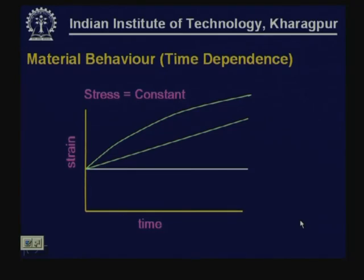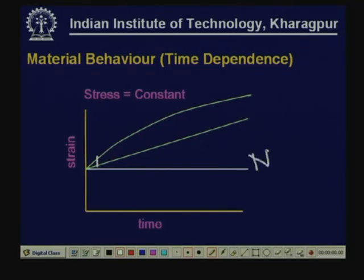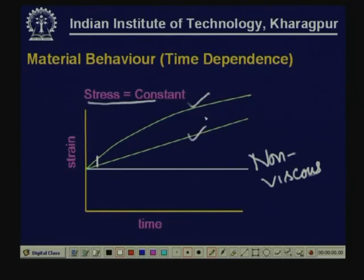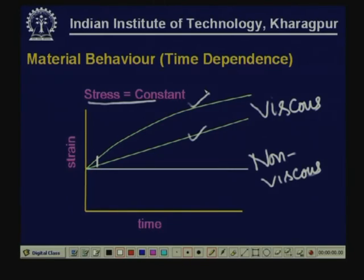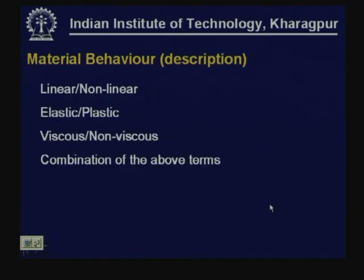The time dependence of certain materials: under constant stress, if strain does not change with time, this is considered non-viscous material; whereas for constant stress, if strain goes on varying, those materials are considered viscous. The relationship between strain and time can be linear or non-linear. So we use terms like linear, non-linear, elastic, plastic, viscous, non-viscous to describe the behavior of the material, normally as a combination of these terms.